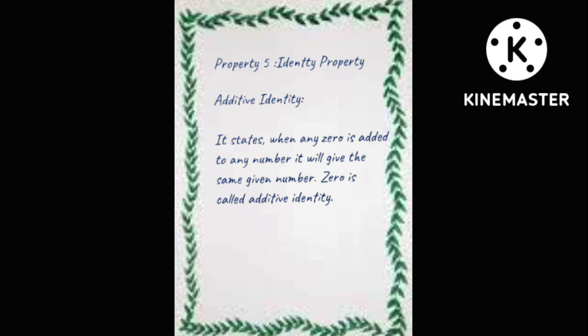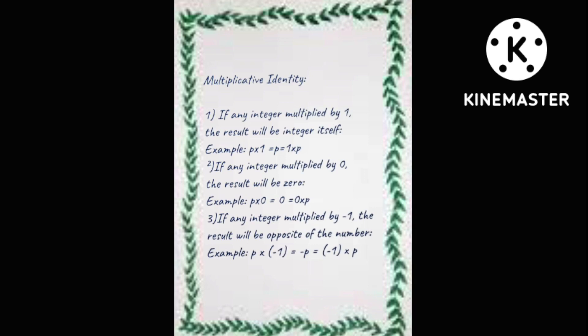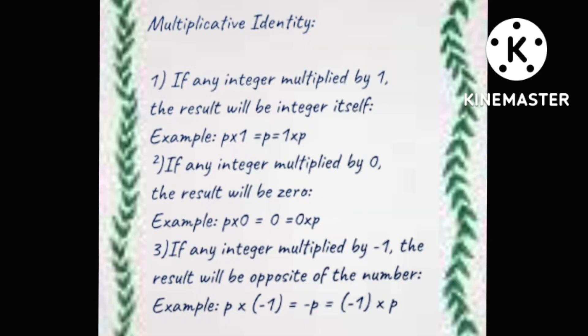The fifth one is identity property. The first one is additive identity with its information. The next one is multiplicative identity with its information under it.